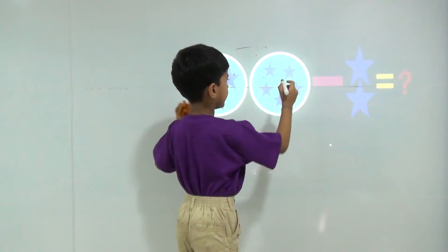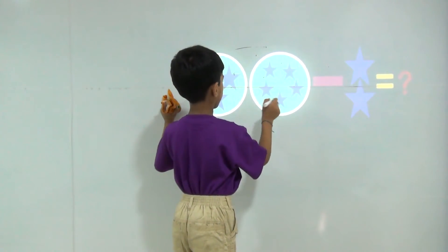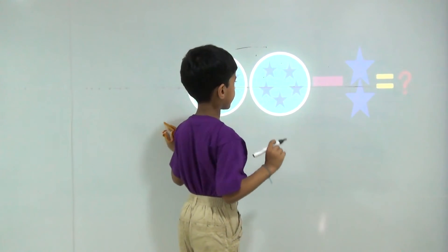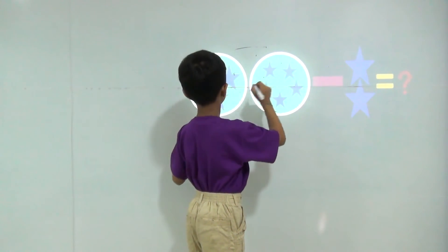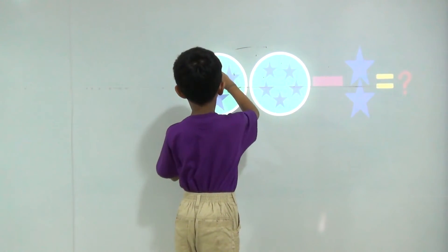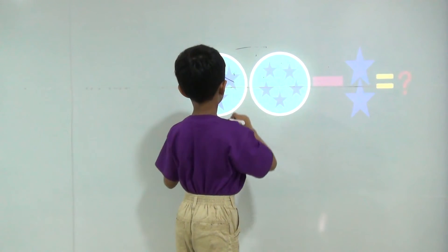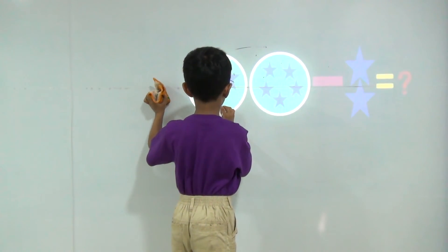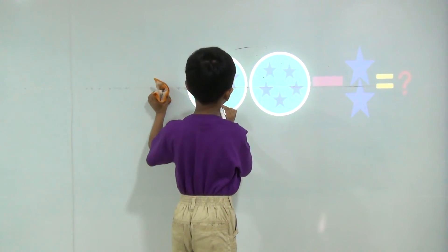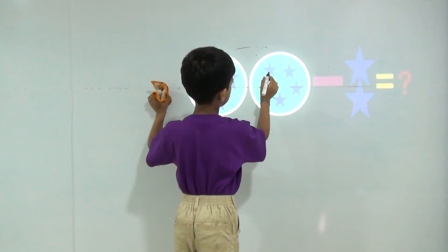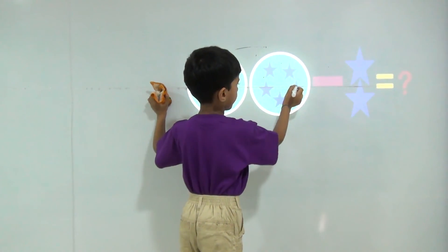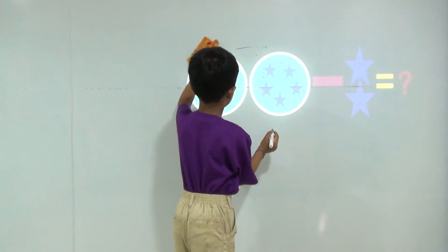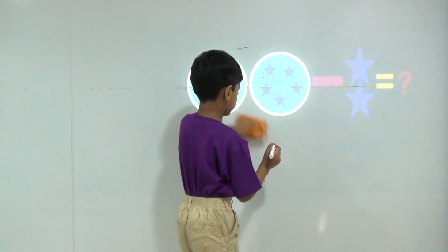I have 8 stars. My bhaiya takes 2 stars. So how many stars do I have? Let's count. 1, 2, 3, 4, 5, 6. So the answer will be 6.